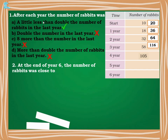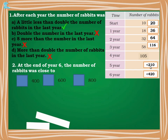At the end of year 6, the number of rabbits was close to 400, 600, or 800? Continuing the pattern: double of 105 is 210, so year 5 is a little less than 210. Double of 210 is 420, so year 6 should be close to 400.